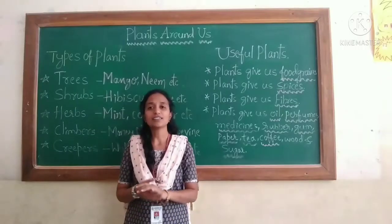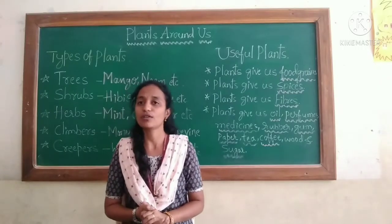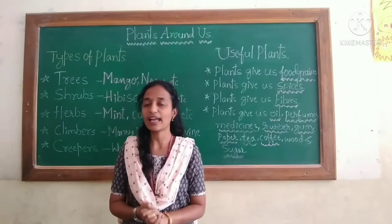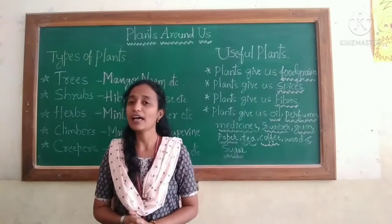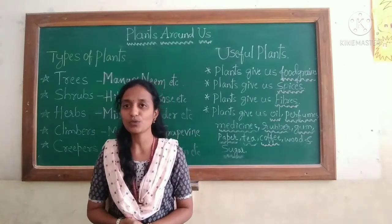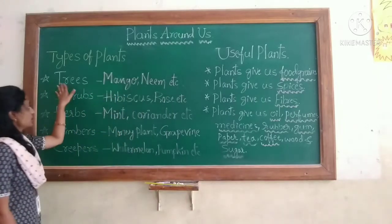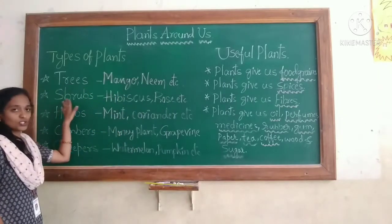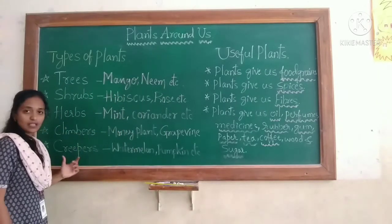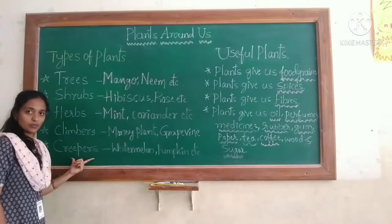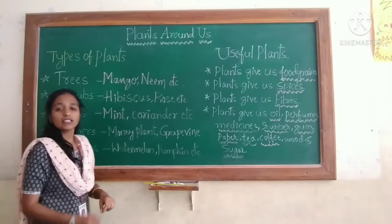Let us discuss types of plants. Based on their size and kinds of stem, they are divided into the following types: trees, shrubs, herbs, climbers, and creepers.